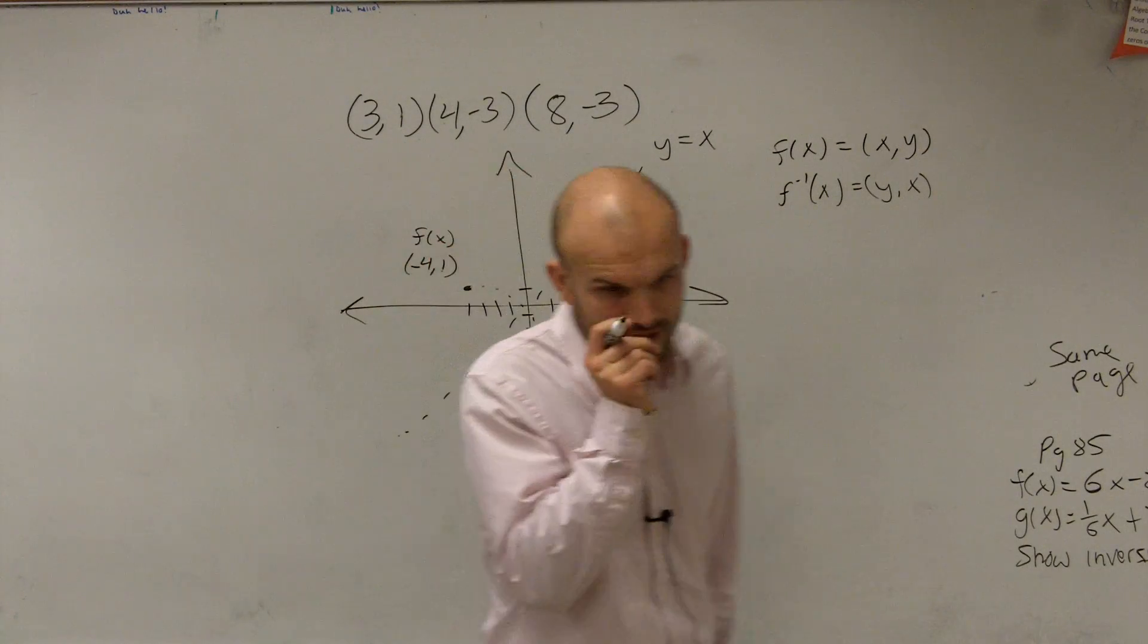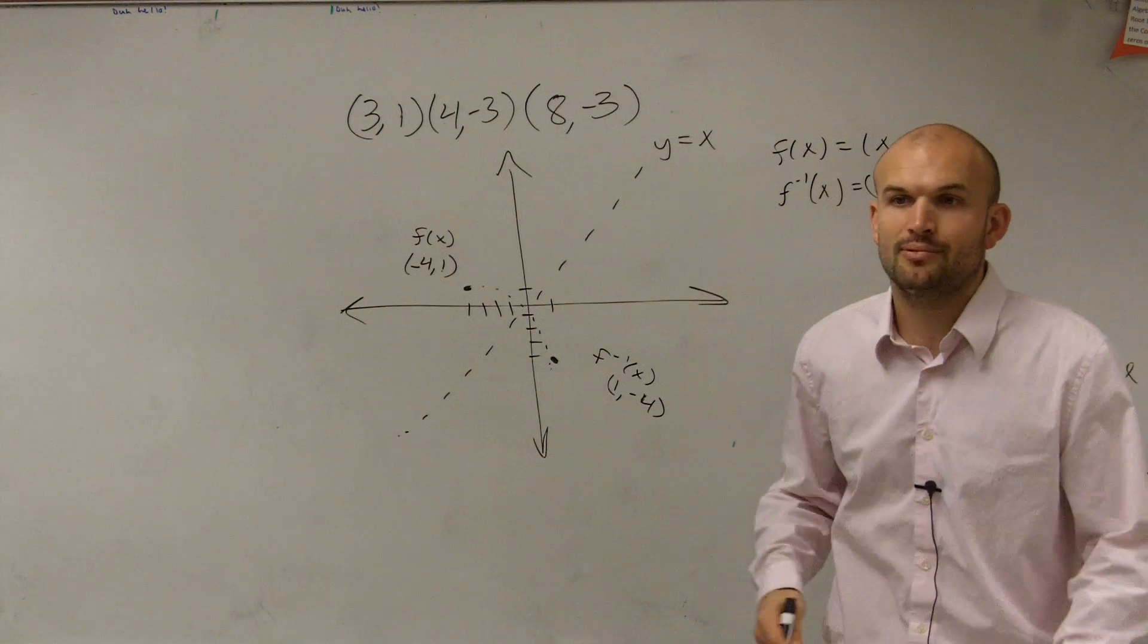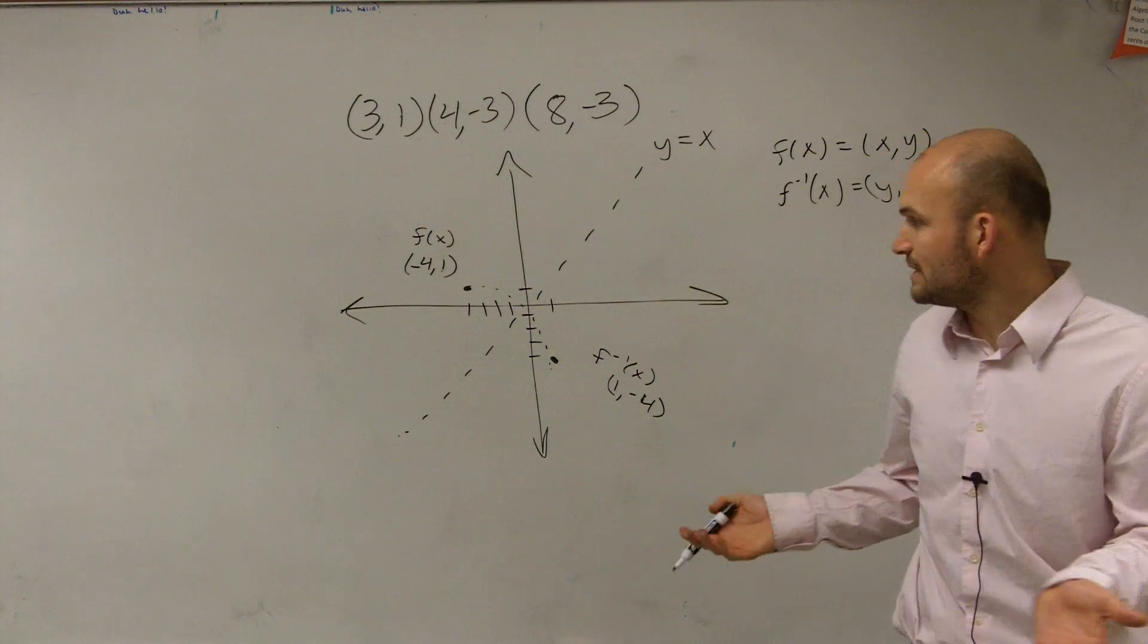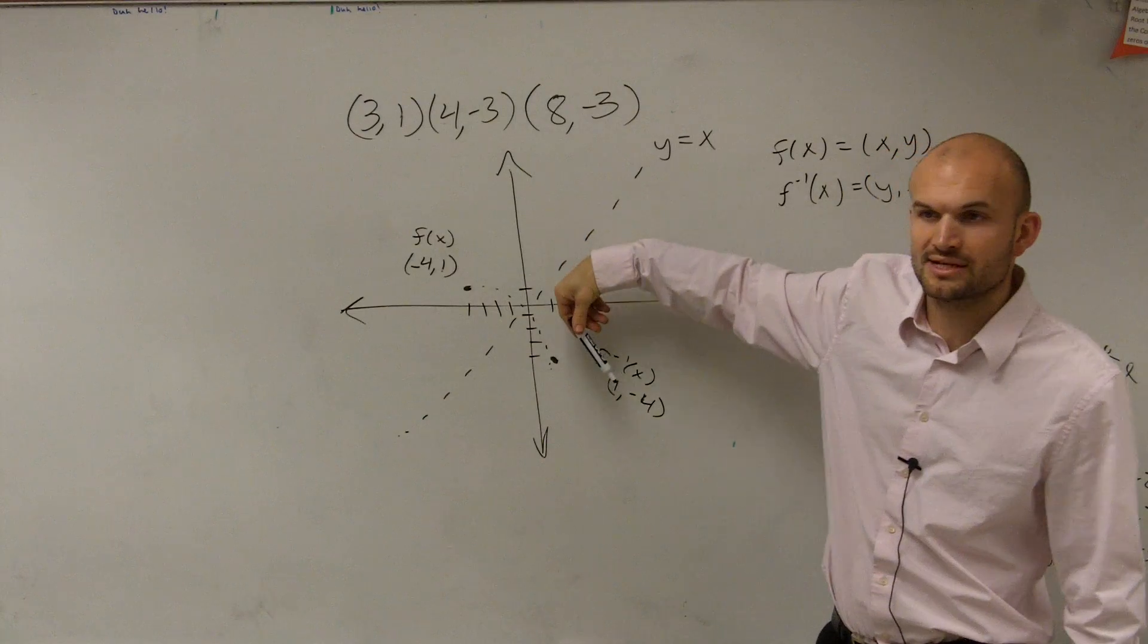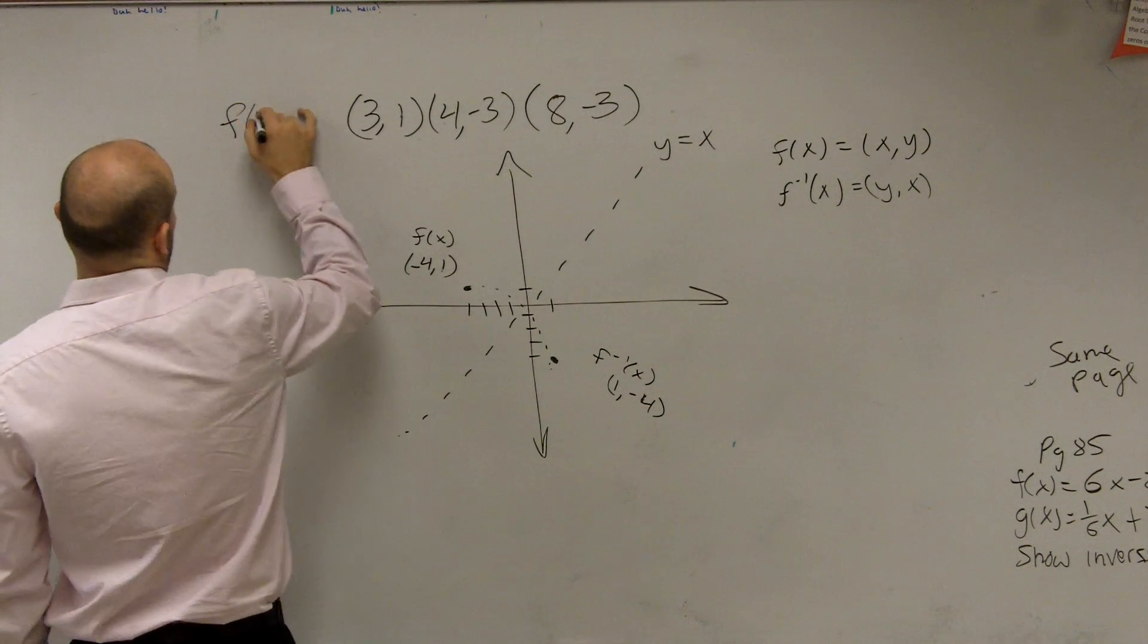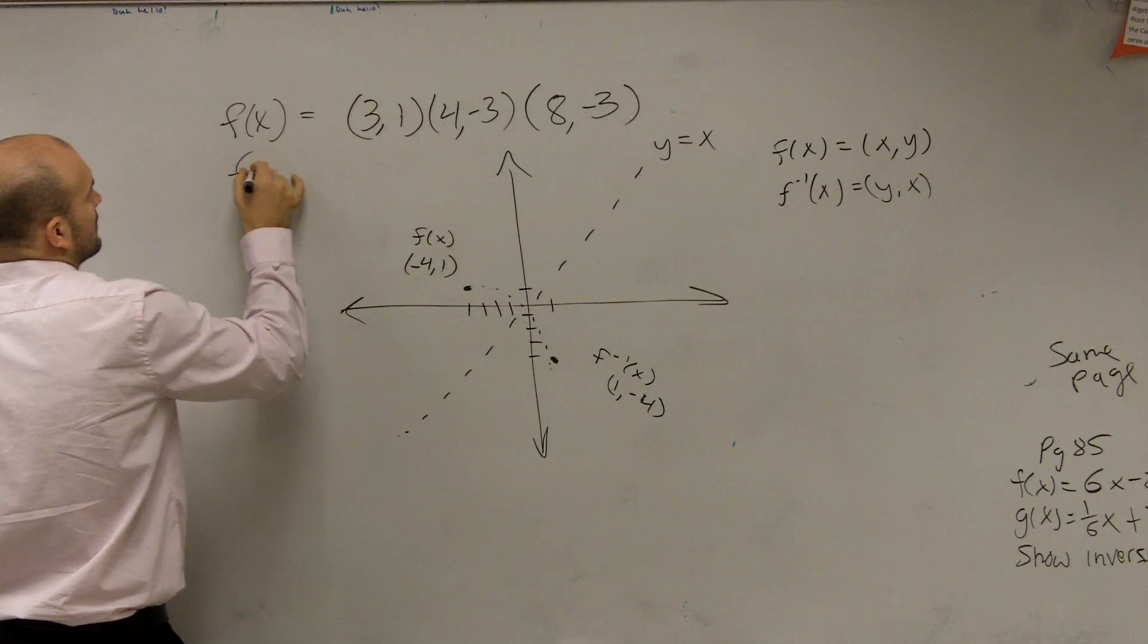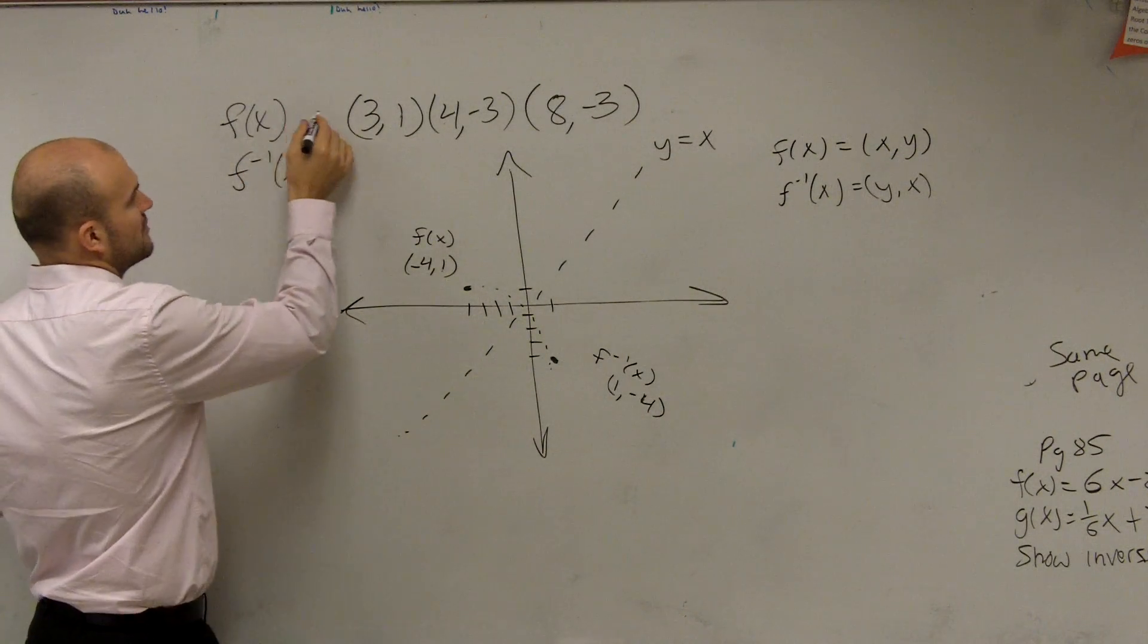So now what they're asking us to do is find the inverse of each relation. So we're given a set of coordinate points. You guys hopefully now can see that the reflection or the inverse is just our coordinate points reversed. So if this is f of x, f inverse of x, well, we don't know if this is a function. So we'll just call it f of x function.